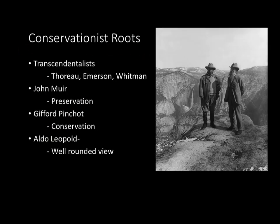Now let's look at conservationist roots. Some of the earliest conservationists were the transcendentalists — think Thoreau, Emerson, Whitman — who basically put a divine value on nature. It then moved into John Muir, who is a huge deal in environmental studies. He came up with the concept of preservation — that we should leave nature completely unharmed by humans. Using the terms we just learned, that's essentially an ecocentrist mindset: instead of using resources, we should just let nature be.